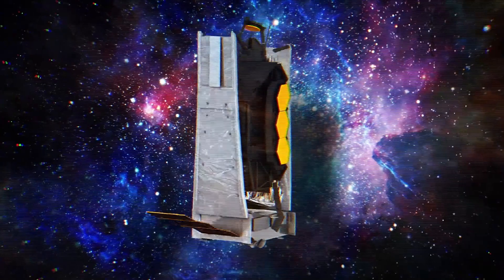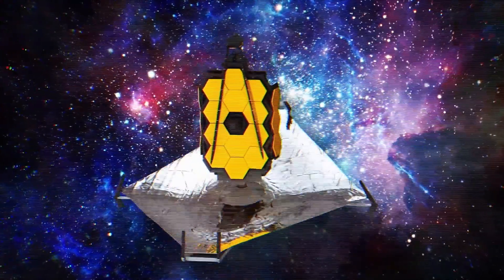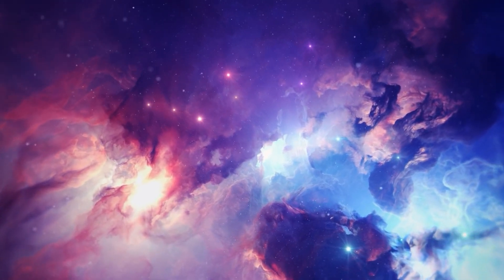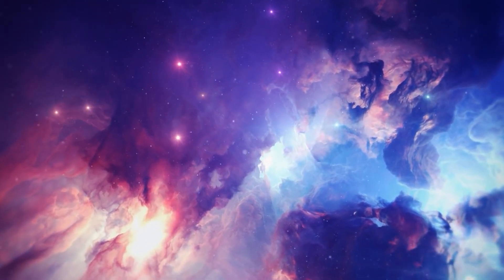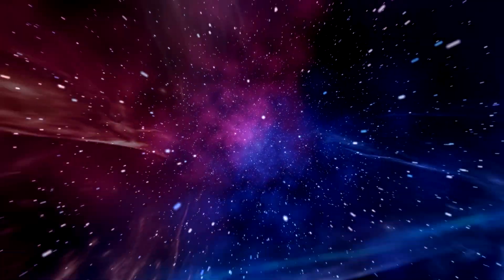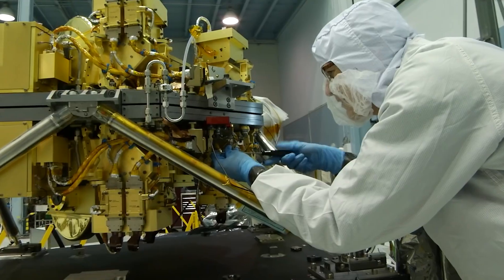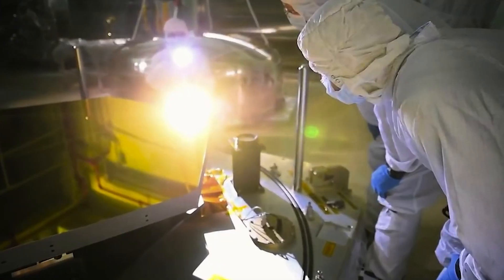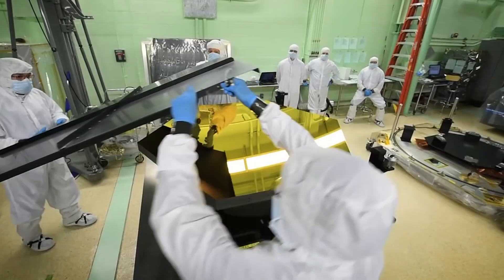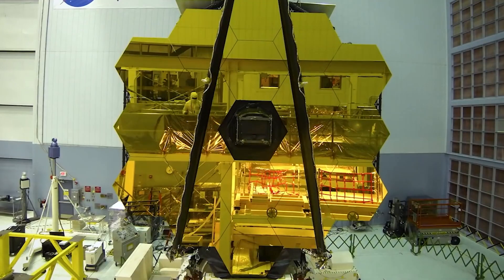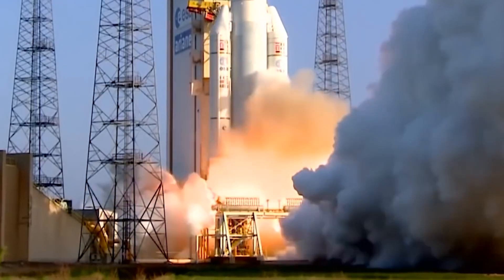Unfolding its mirrors, sunshield, and other smaller systems, cooling down, aligning, and calibrating. Astronomers worldwide will then be able to conduct scientific observations to broaden our understanding of the universe. Webb will also complement the science achieved by other NASA missions. Thousands of engineers and hundreds of scientists work to make Webb a reality, along with over 300 universities, organizations, and companies from 29 U.S. states and 14 countries.